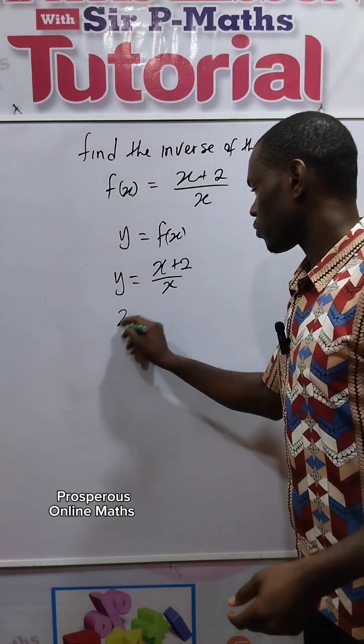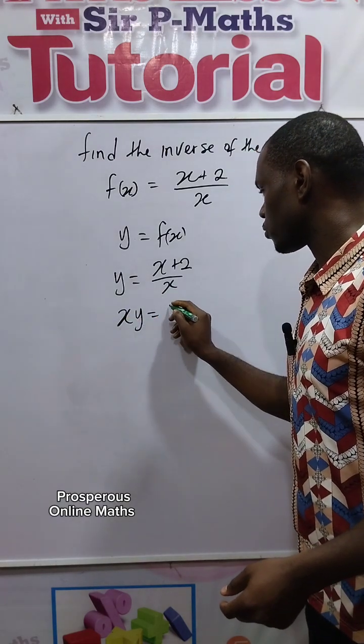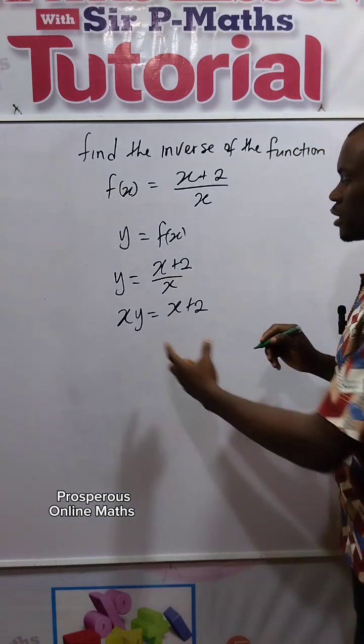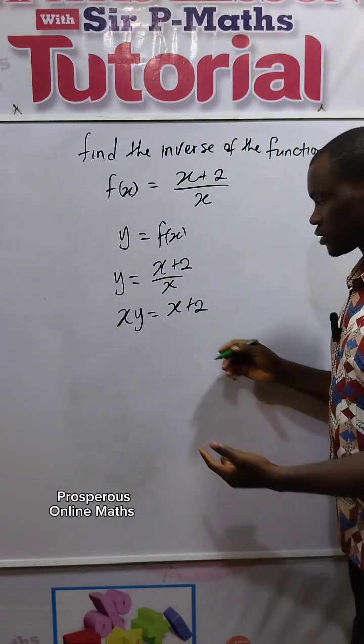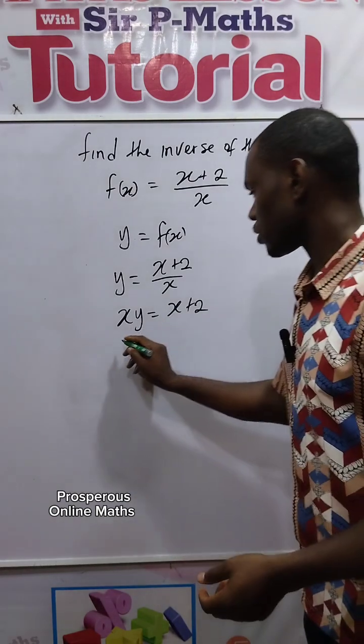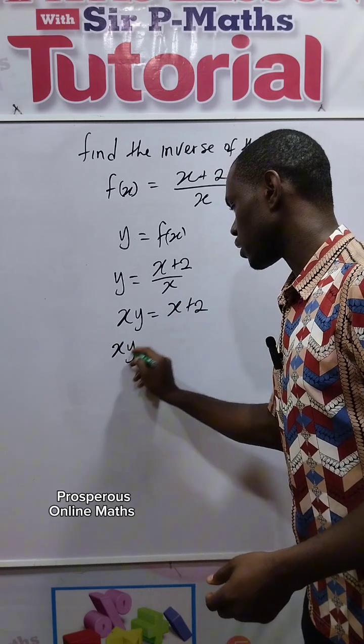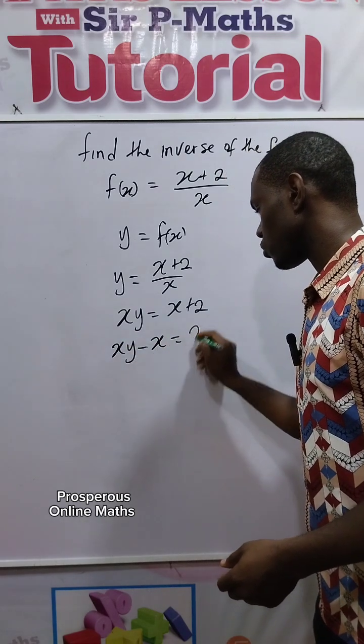Let's cross-multiply. I will have xy equals x plus 2. Then let's collect like terms in terms of x. Take this x across this way. I will have xy minus x equals 2.